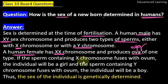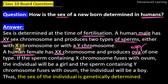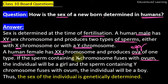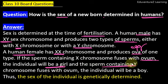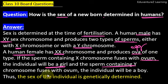If the sperm containing X chromosome fuses with the ovum, agar male se aya hua X chromosome ovum ke saath fertilize karta hai, to X aur X milke girl banengi. Aur agar Y chromosome wala sperm jho hai, woh agar jaa ke ovum ke saath fuse karta hai, toh boy create hooga.